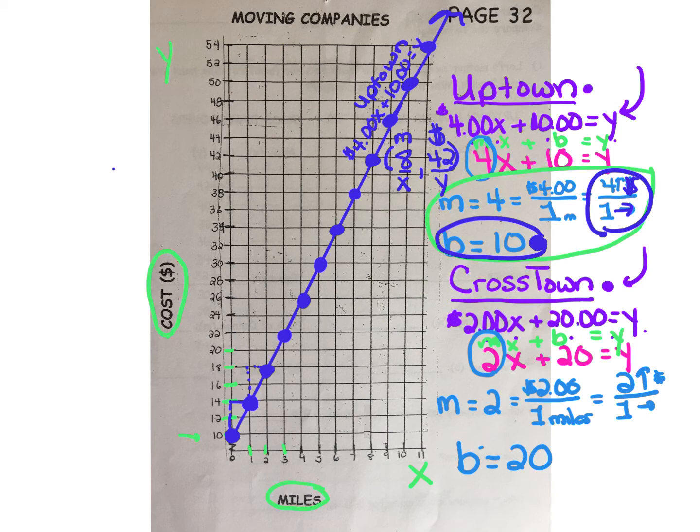Now let's graph Crosstown. Crosstown has an initial start value of $20. You can see that that $20 charge is higher than the $10 we pay for Uptown.